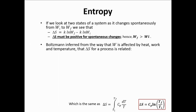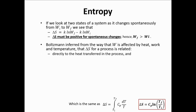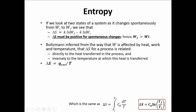Boltzmann inferred from the way W is affected by heat and work, creating an equation that allows calculation of entropy change from heat and temperature. He inferred that delta S for a process is directly related to the heat transferred and inversely related to the temperature at which the heat is transferred. Hence, we have the formulation: delta S equals Q_reversible over T — this is the formulation of the second law of thermodynamics, for the case where temperature is constant.